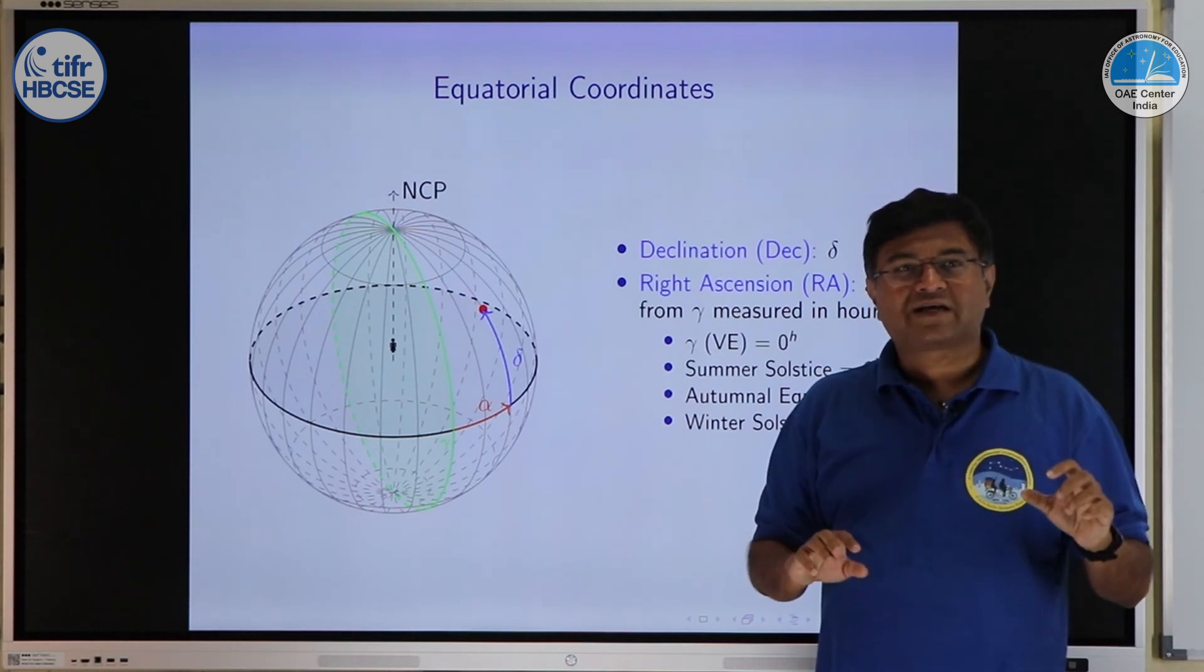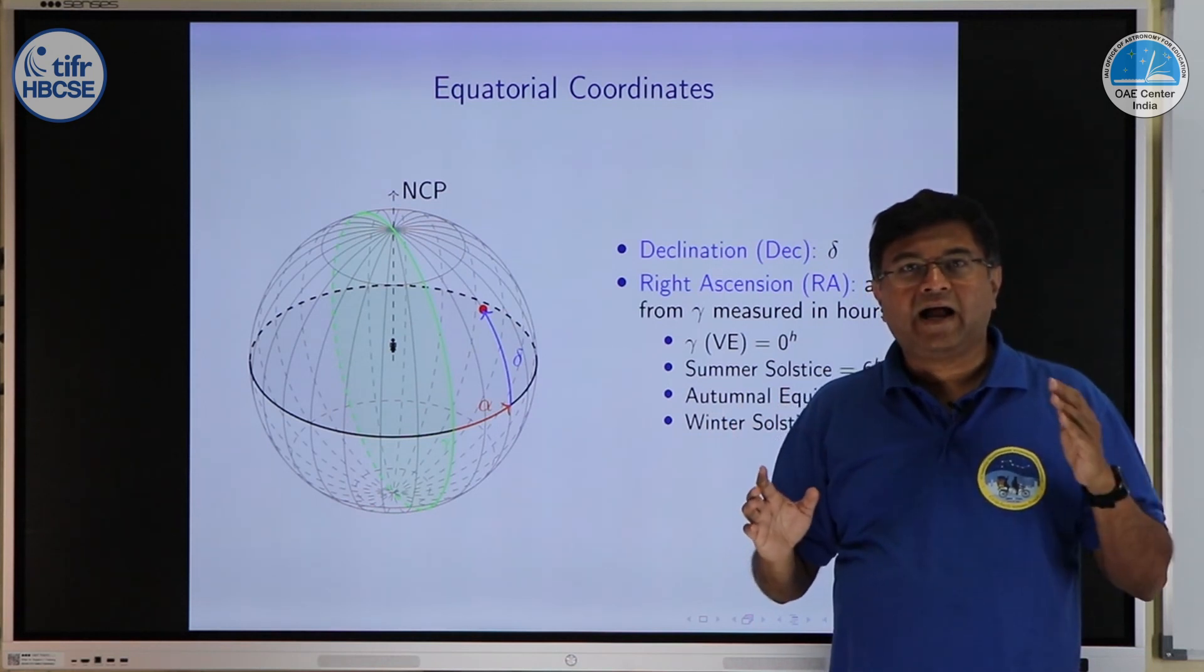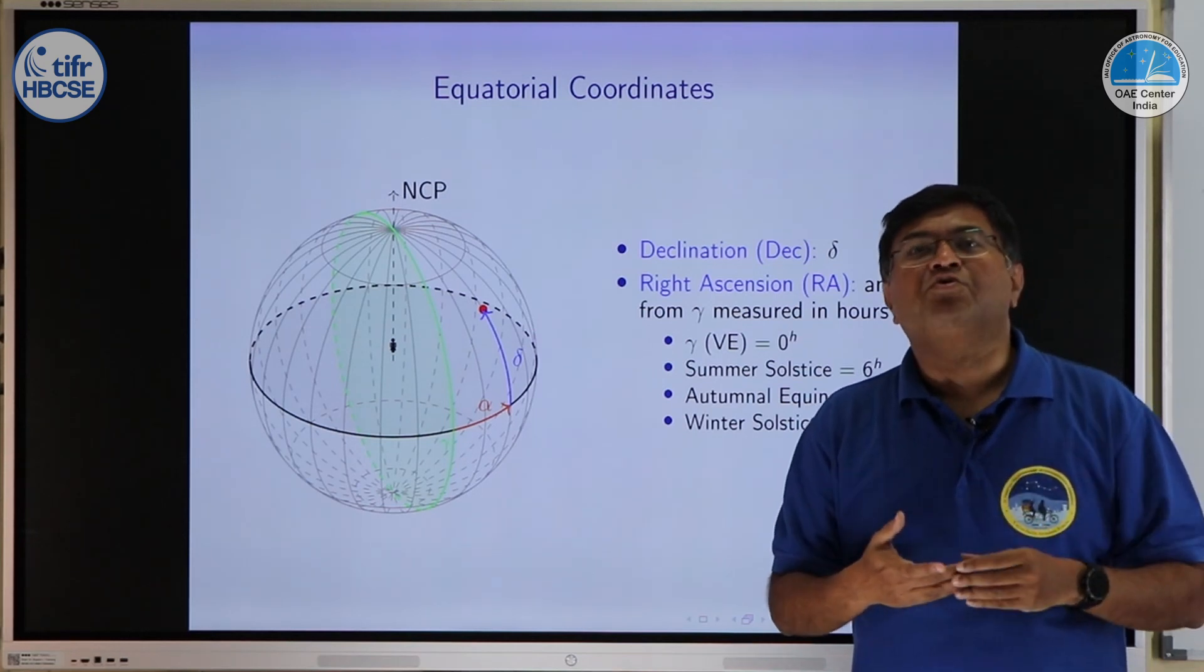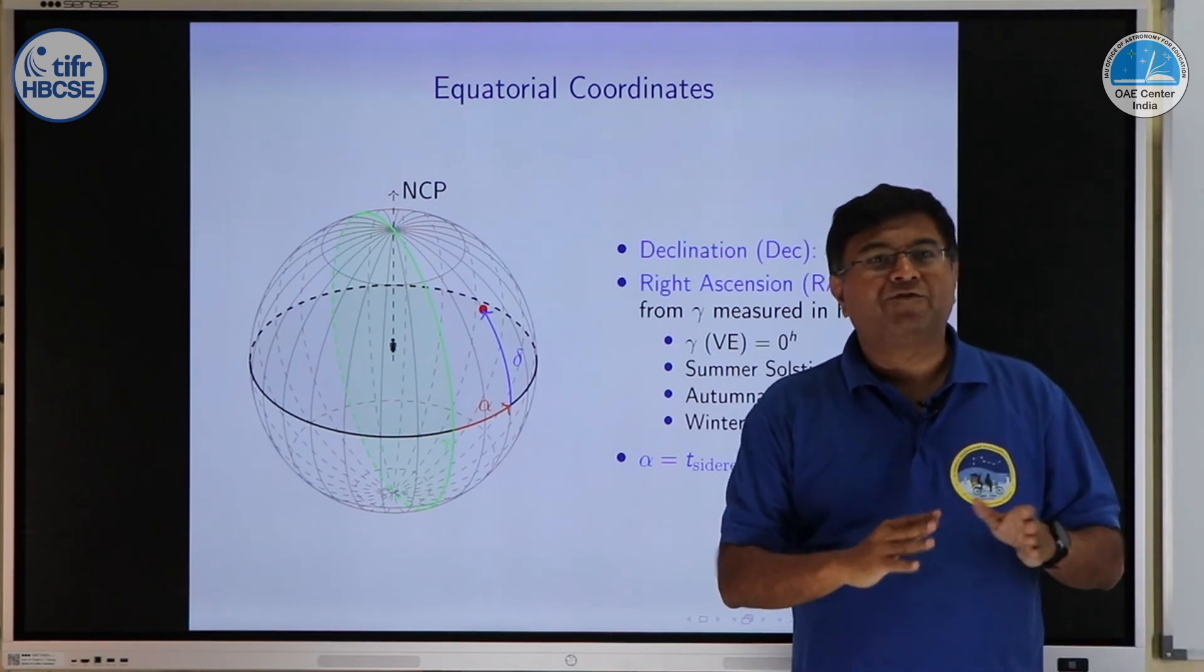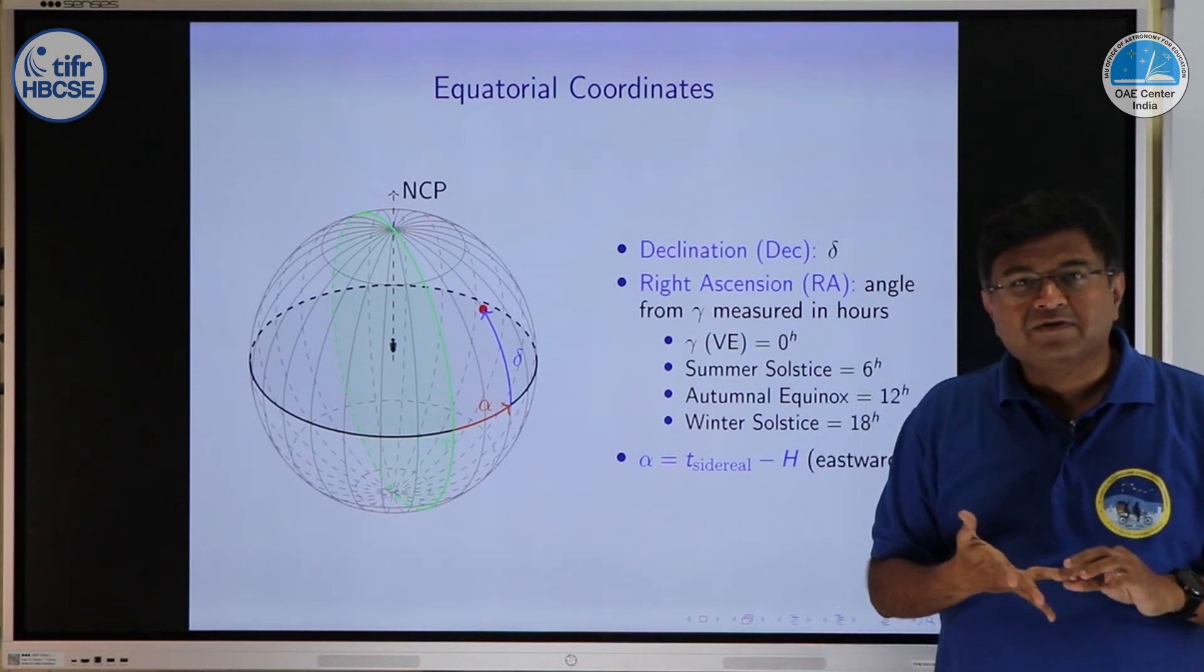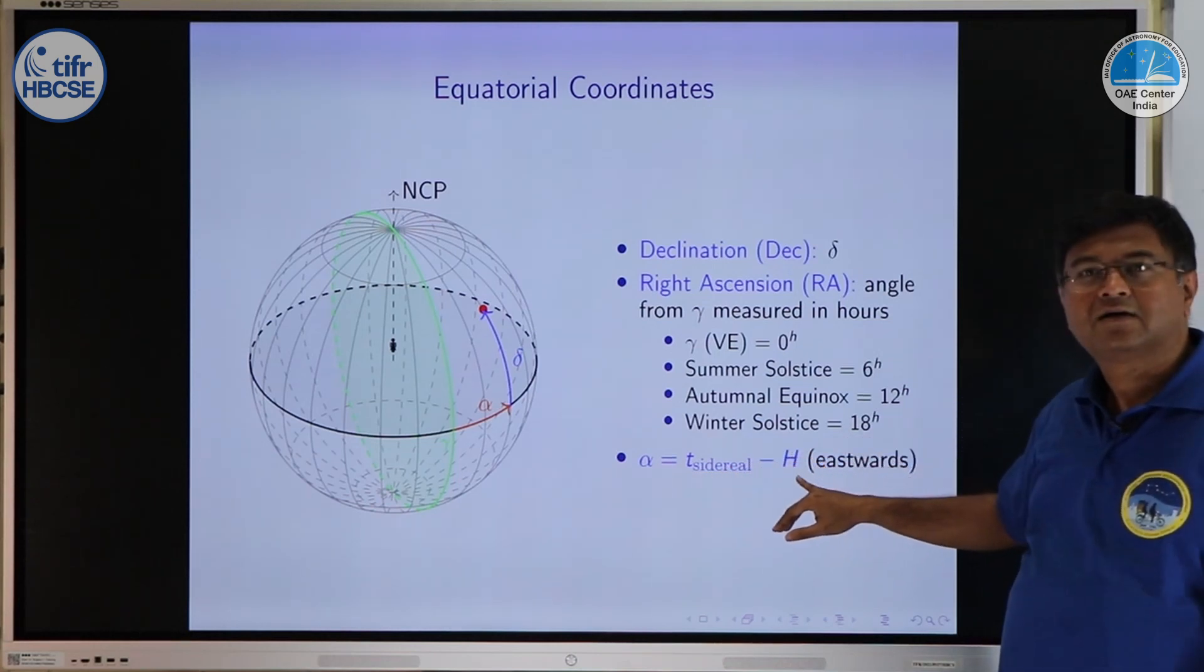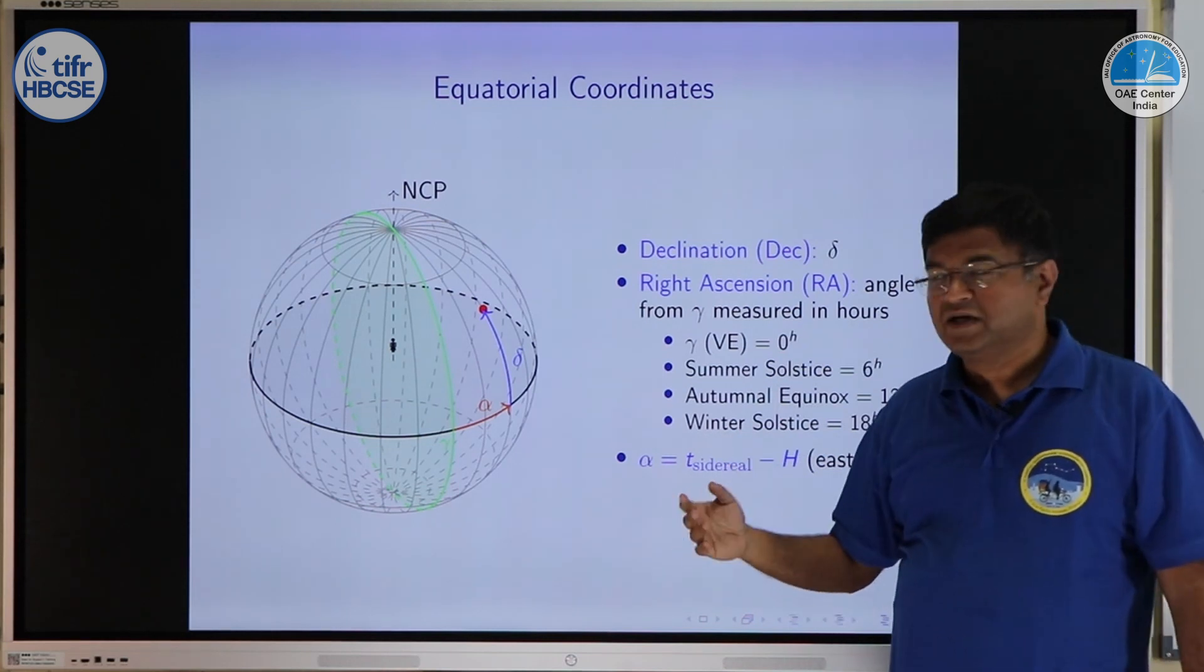The rotation of sky also gives you sidereal time. And the sidereal time, hour angle and right ascension are connected to each other. That is why we use same unit for all three. Hour angle is also measured in hours, sidereal time is measured in hours, right ascension is also measured in hours and that is related by right ascension is sidereal time minus hour angle. Hour angle as you know is always measured eastward.